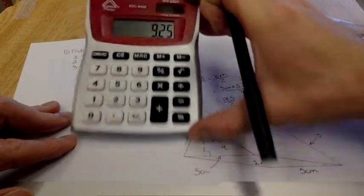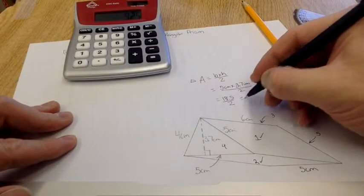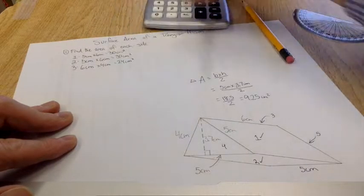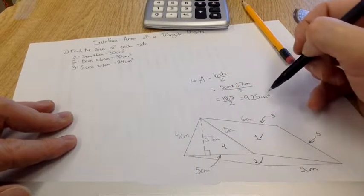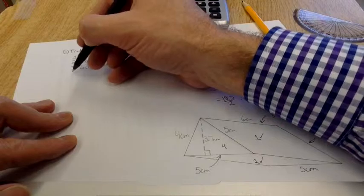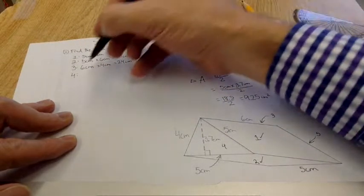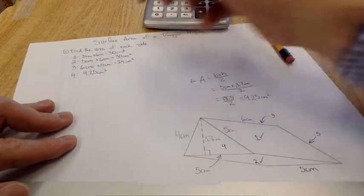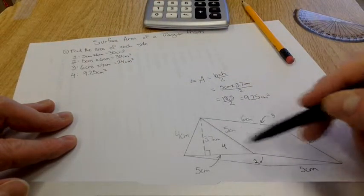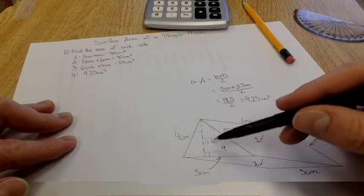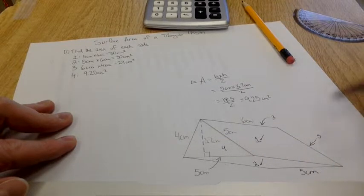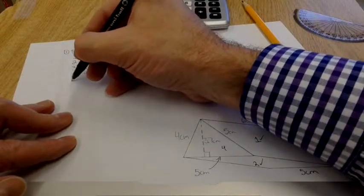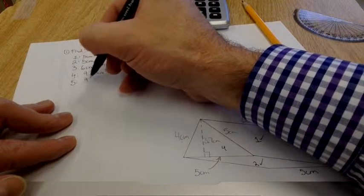9.25 centimeters squared. So that was side four. We're just going to move this over to here, 9.25 centimeters squared. And I know because this is a regular triangular prism that side number four and side number five are exactly the same size and shape, so I can just put 9.25 centimeters squared for that as well.